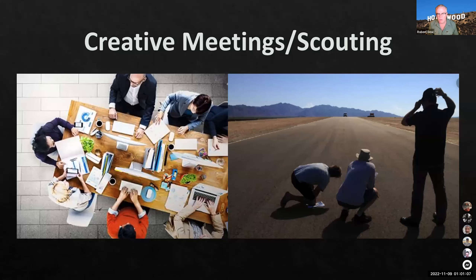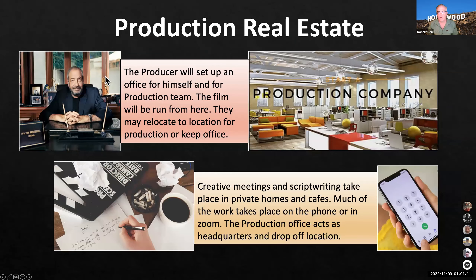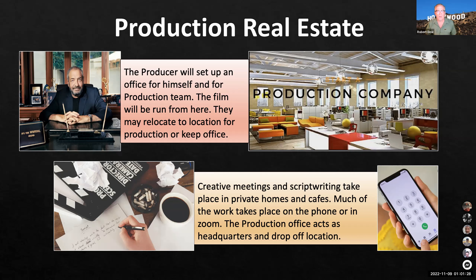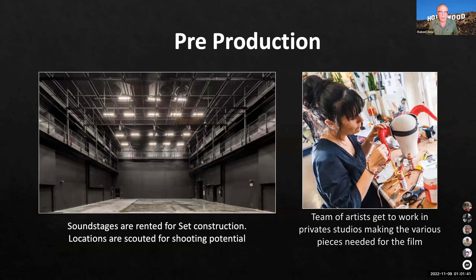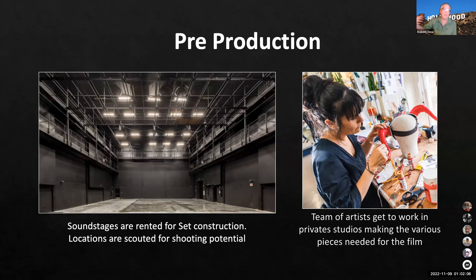For creative meetings and scouting, the producer usually rents a production office — production companies spring up and rent space. A lot of creative meetings and script writing take place in private homes, cafes, over the phone or Zoom. You'll also start renting sound stages so you can begin building sets, though you won't rent them until drawings or models are approved by your director. If you have a fantasy film, you'll need to set your art department to work on props so they can be completed for actual shooting.